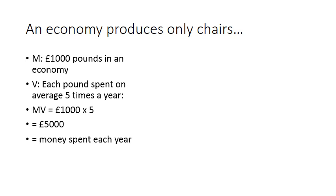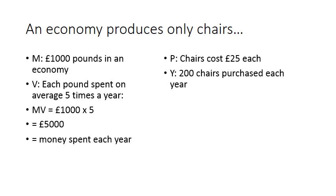And what about on the PY side? Well let's say we're only producing chairs, so we've only got one price as part of our price level, and let's say that price is £25. And our level of production, Y, output by volume, is 200 chairs. Then to work out PY, all we do is we take the £25 and times it by the 200, and we get £5,000.